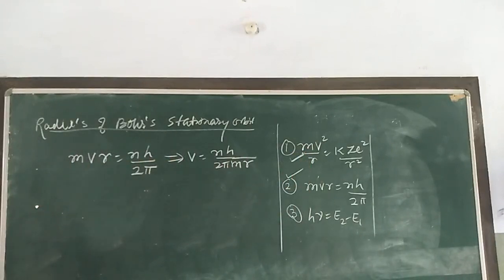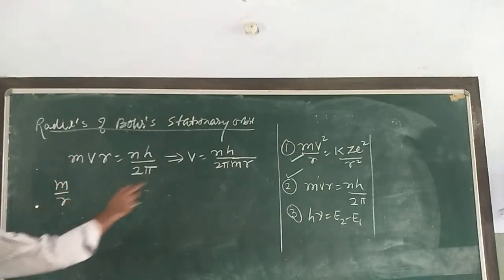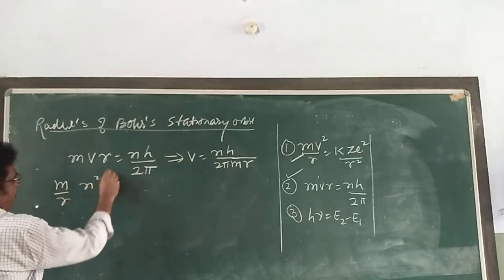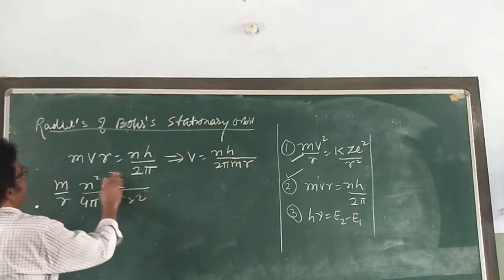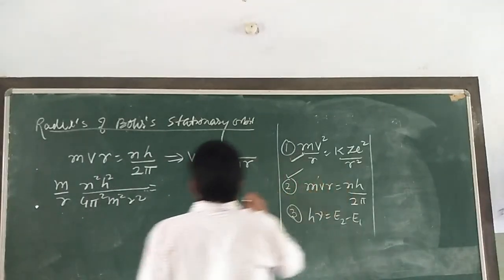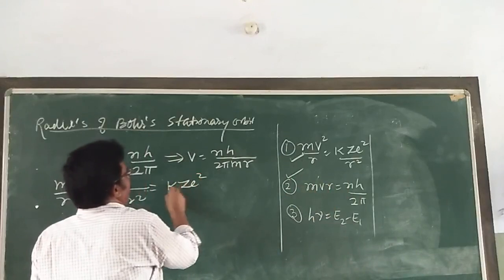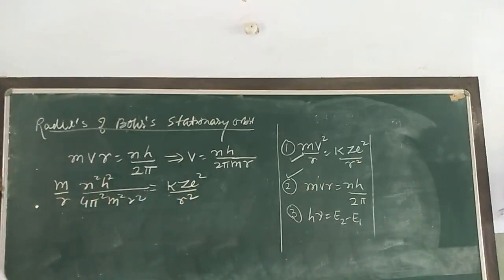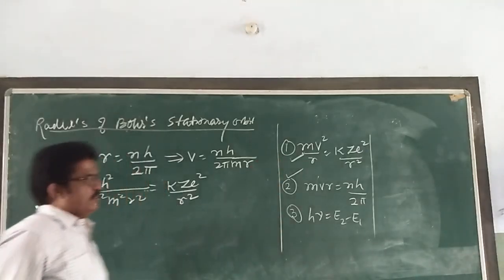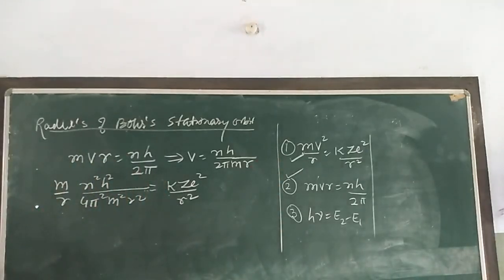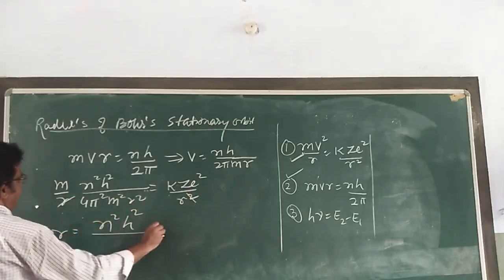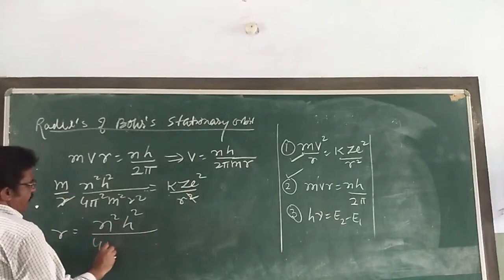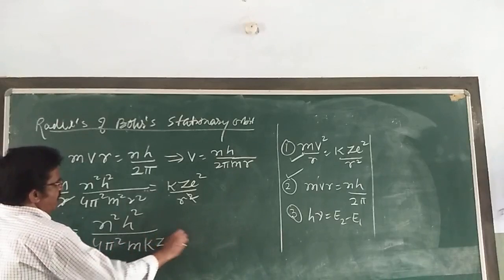Substituting, we get m/r × v² = m/r × n²h²/(4π²m²r²), which equals kze²/r². Simplifying, r comes out to be r = n²h²/(4π²mkze²).